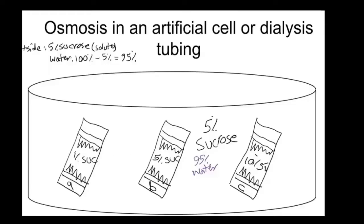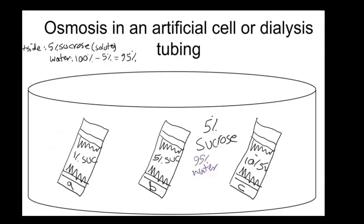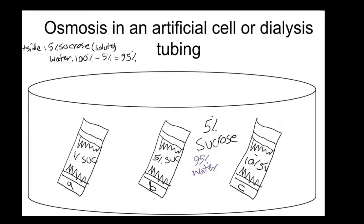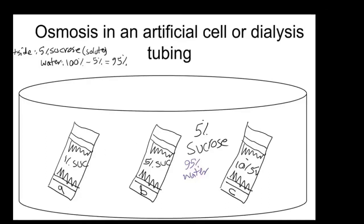Imagine you have three bags: bag A is filled with 1% sucrose, bag B is filled with 5% sucrose, and bag C is filled with 10% sucrose, and we immerse them in a 5% sucrose solution. An important thing is that this membrane or dialysis tube is not permeable to sucrose, which means you need to focus on water concentration.